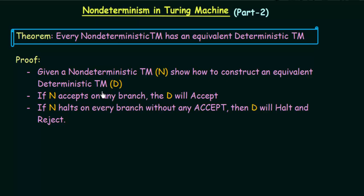We call it 'any branch' because in non-deterministic Turing machines there are different possibilities for a single input, so we have different branches in our computational history. If N halts on every branch without an accept, then D will halt and reject — meaning if the non-deterministic Turing machine halts on every branch without reaching an accept state, the equivalent deterministic Turing machine will halt and reject.